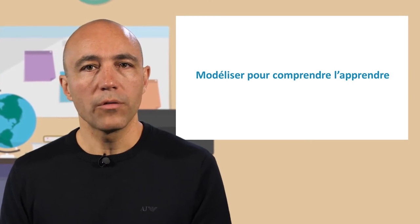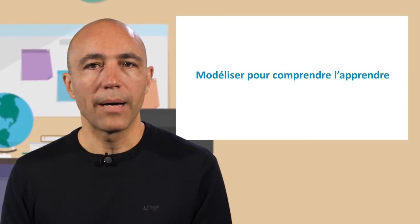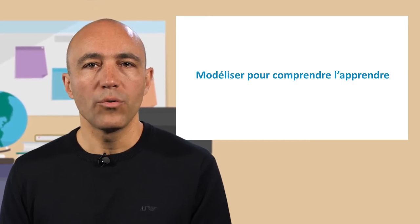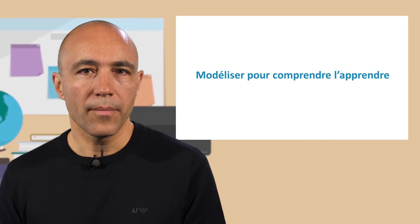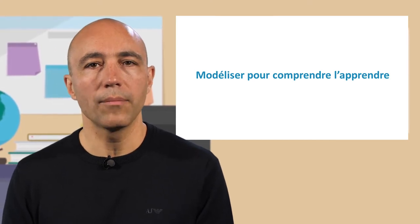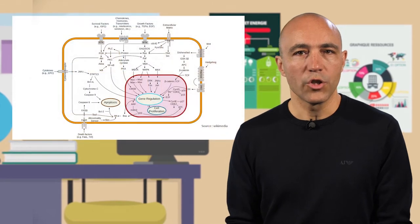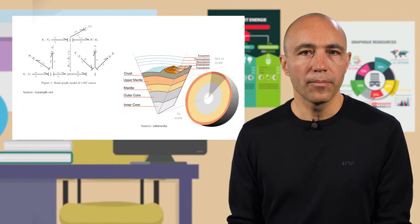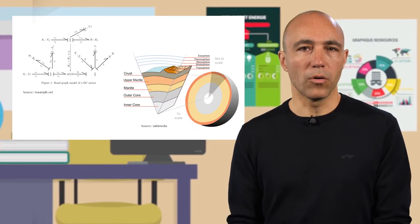Comment construit-on un modèle scientifique ? D'abord en isolant les paramètres et les comportements les plus significatifs du système étudié, puis en définissant et en formalisant des concepts précis, et enfin en articulant ces derniers par des lois. Il existe différentes catégories de modèles. Schématiques, numériques ou expérimentaux, la diversité des modèles scientifiques est immense.